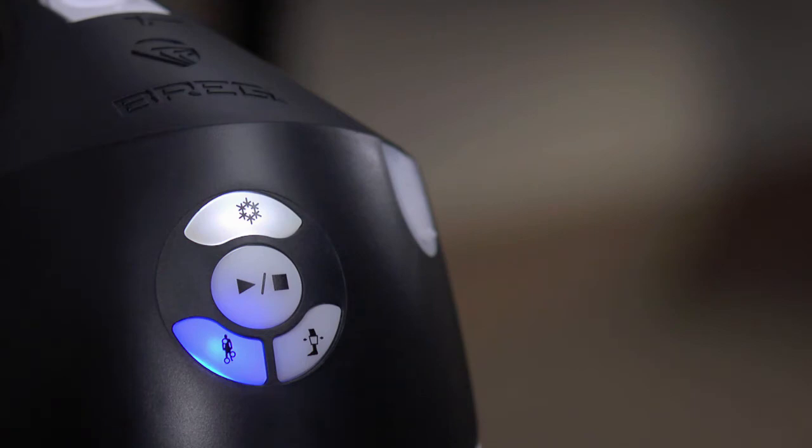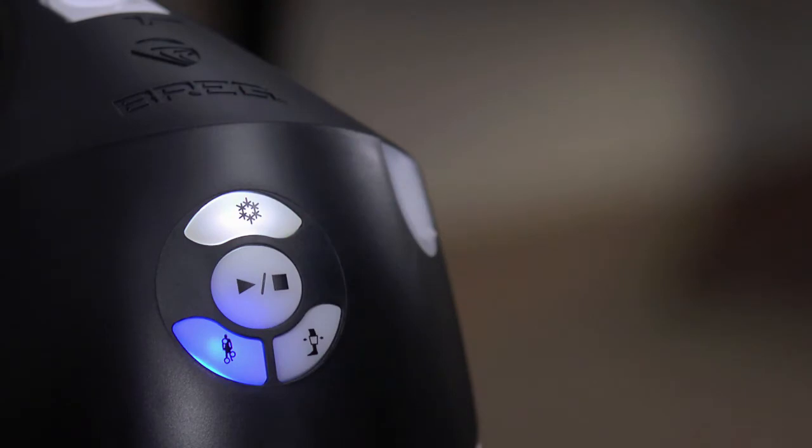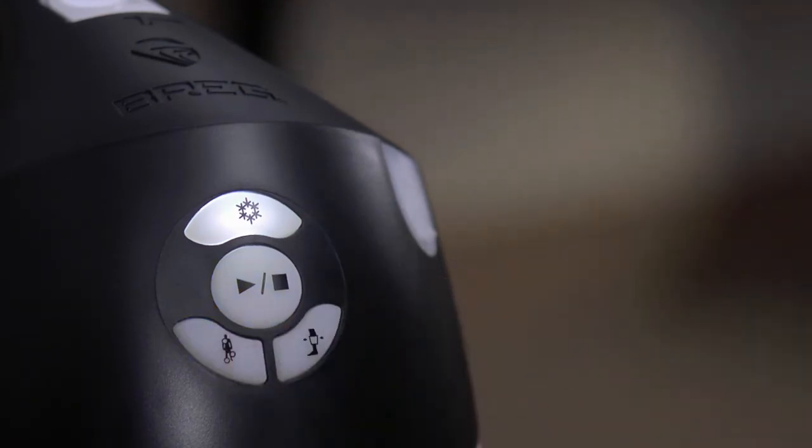Once you've selected your therapies, then push the center start stop button to begin. The start stop button will illuminate green when the system is running. You can change the settings only when the system is stopped. Press the start stop button to turn off the system, add or change your therapy selections, and then press the start stop button again to restart.